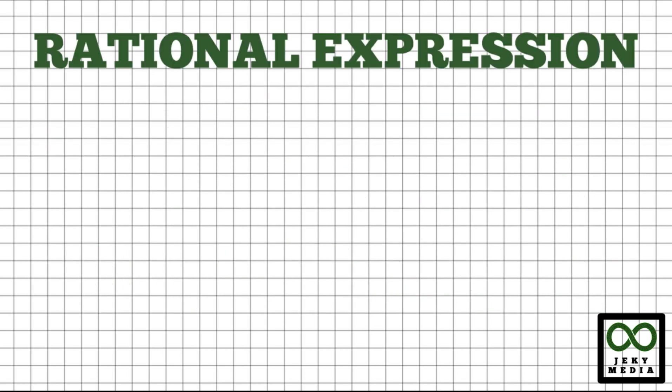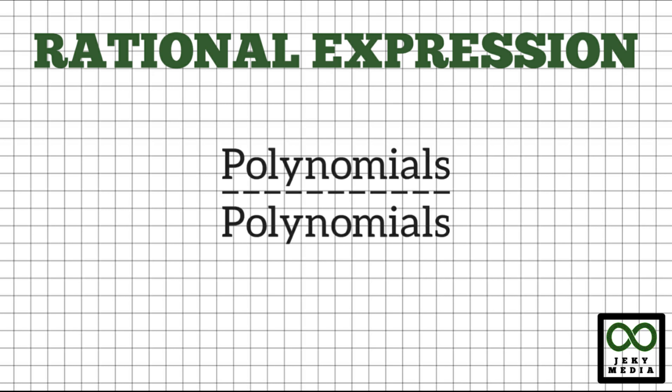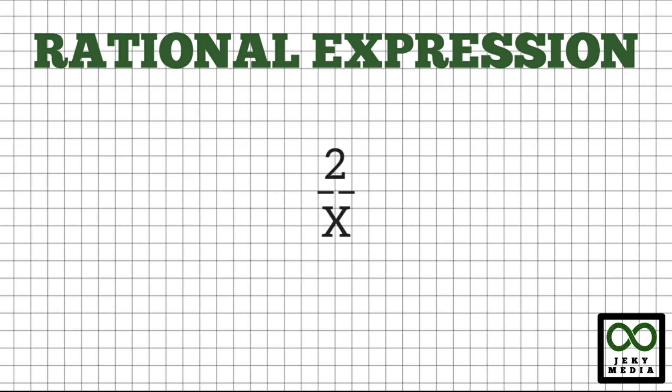First, let's take up rational expression. Rational expression is simply a quotient of two polynomials. It's a fraction where the numerator and denominator contains polynomials. Rational expression may be as simple as 2 over x, or a more complex one, such as 4x squared plus 4x plus 1 over 2x plus 1.